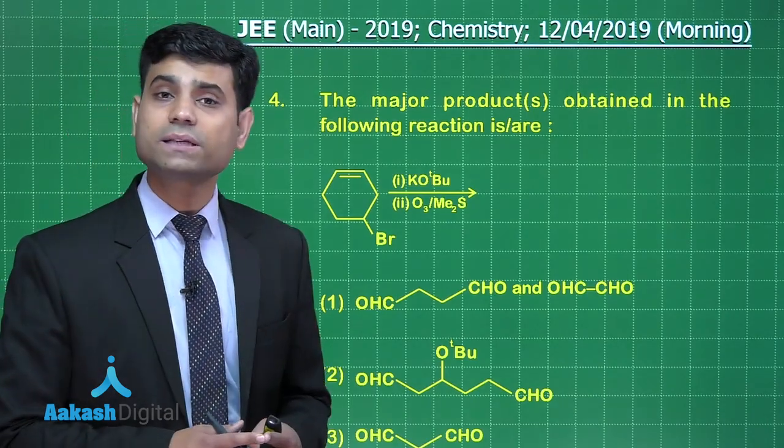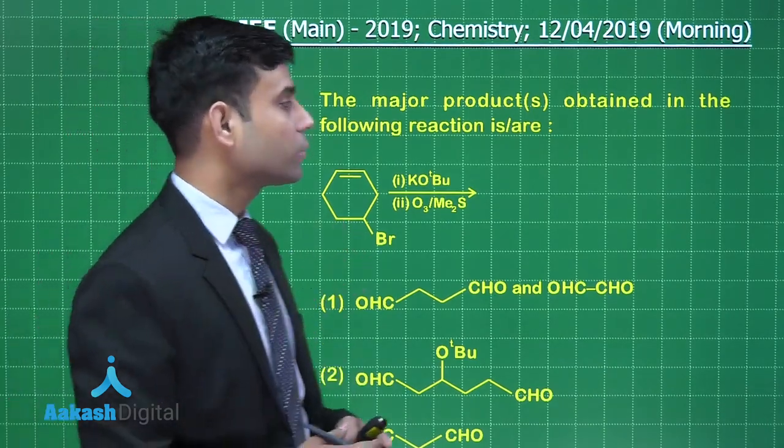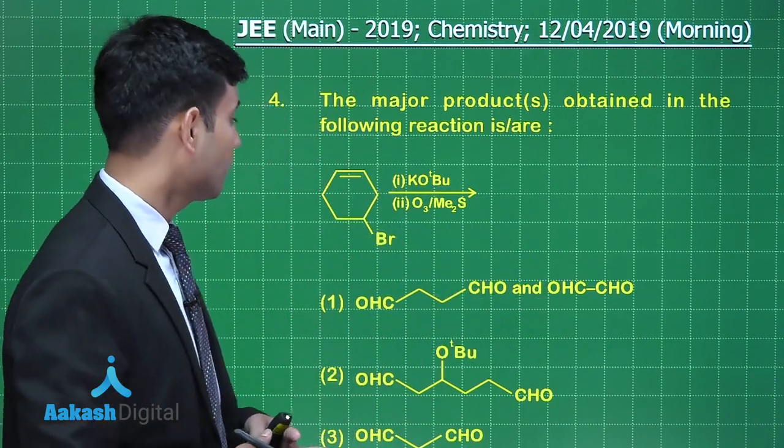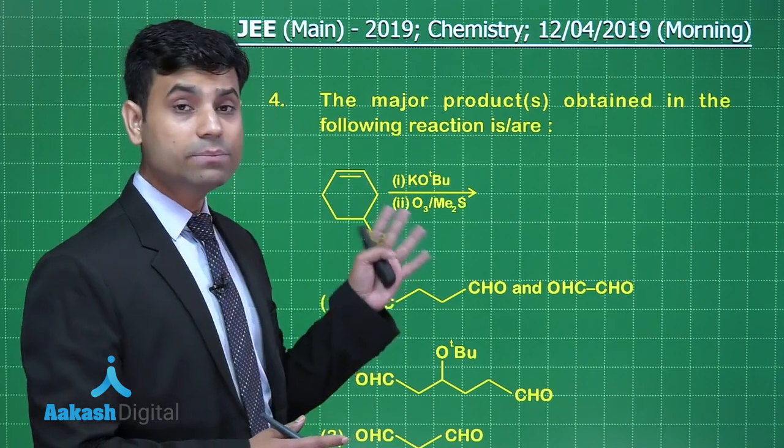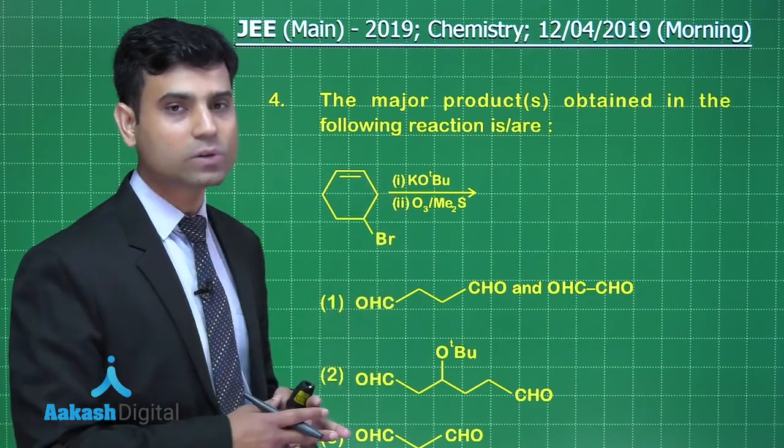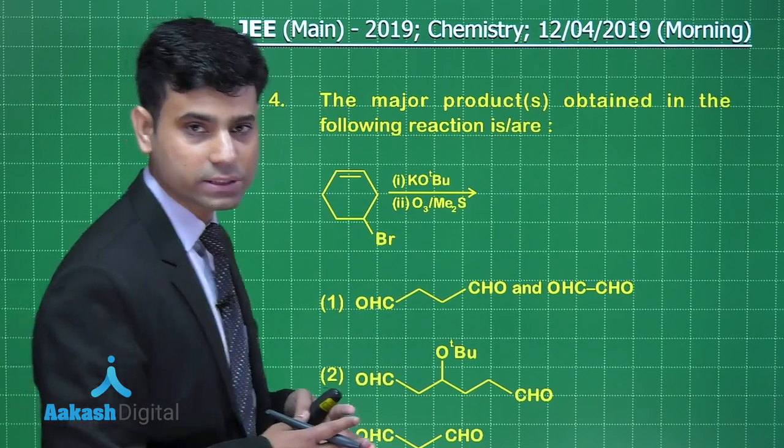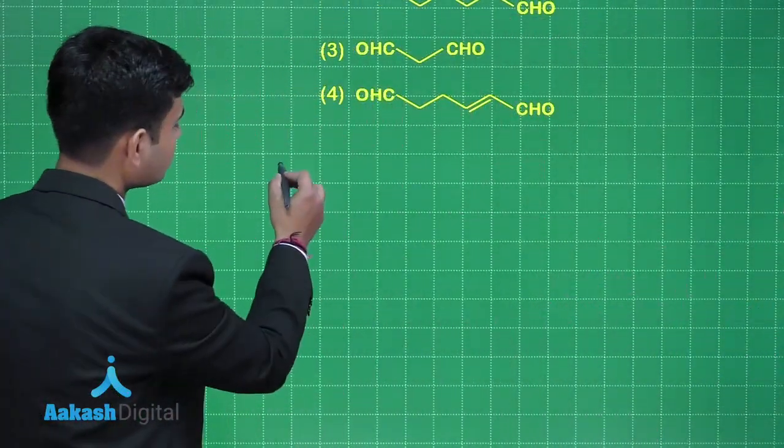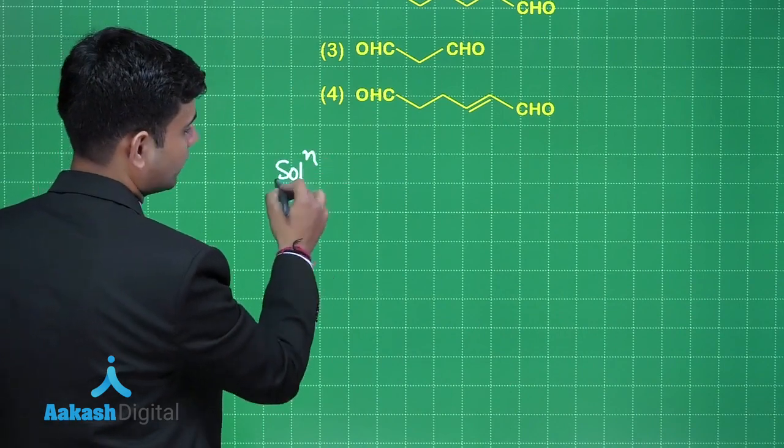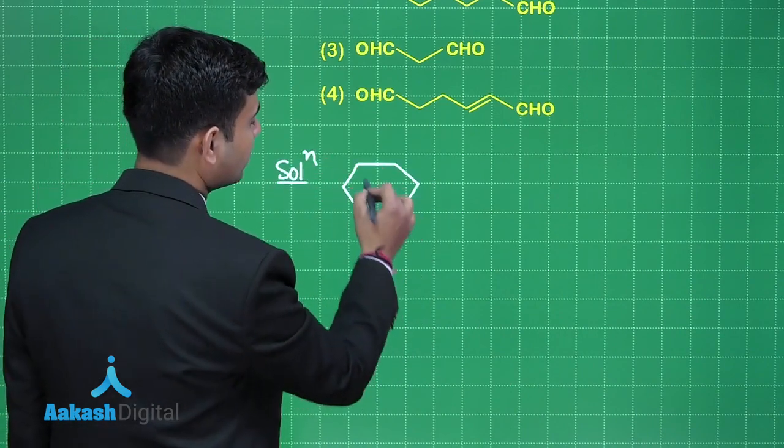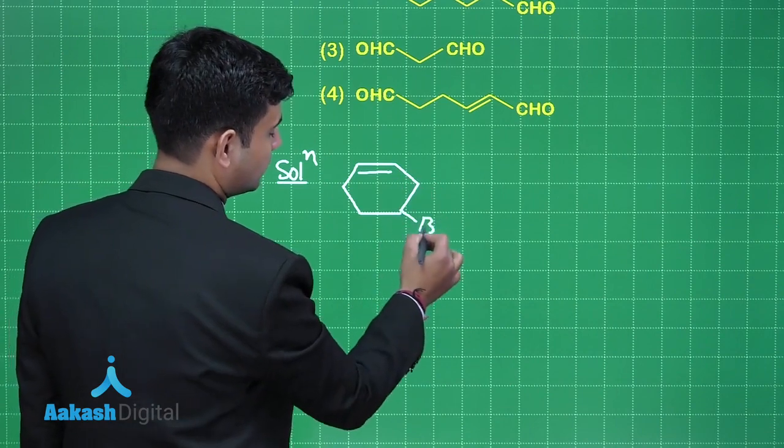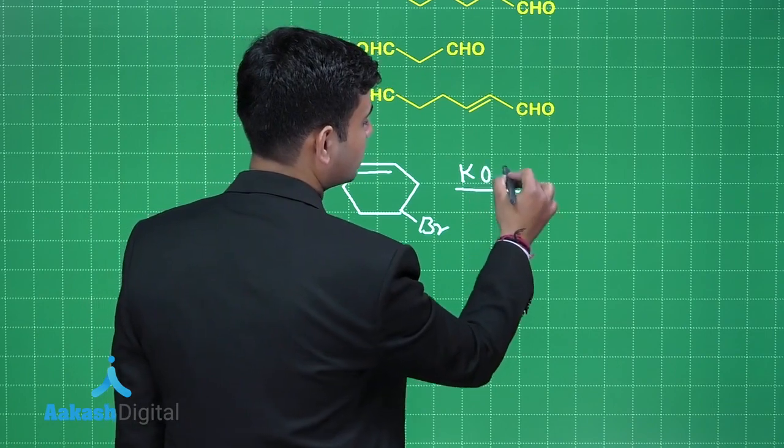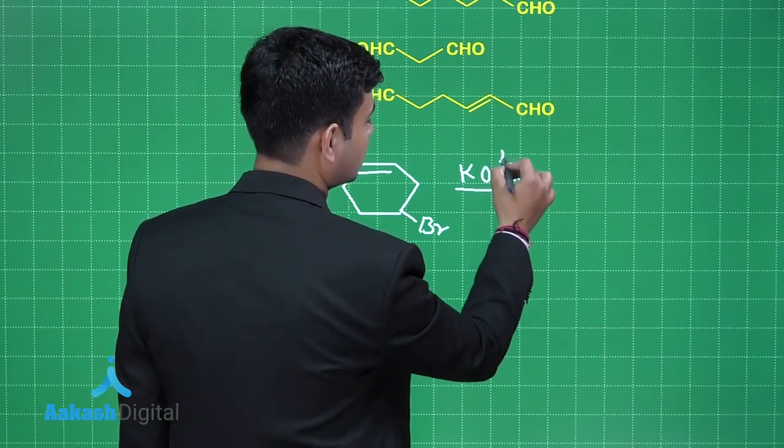This is the next question we have. It says the major product or products obtained in the following reaction is... We have the reaction where we have potassium tertiary butoxide and then reductive ozone analysis. Let's solve this question. Here we are using potassium tertiary butoxide, so...